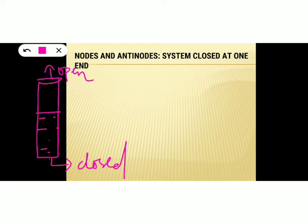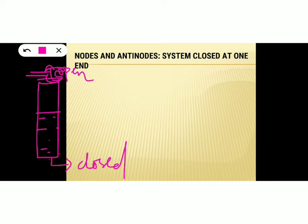This air column can be set into vibrations with the help of a tuning fork. You vibrate the tuning fork at the open end of the tube, and those vibrations pass through the air into the tube. A tuning fork generates longitudinal waves — sound waves — which are an example of longitudinal waves.